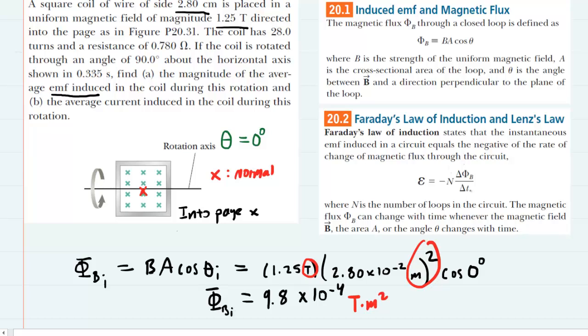But what we need is the change in the magnetic flux. So we still have to find the final flux. We can do that by noting that the loop or coil is rotated 90 degrees about the horizontal axis. If we come back to this picture and imagine rotating the loop by 90 degrees, then the loop would be in this orientation.